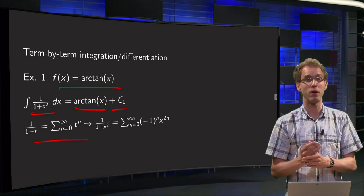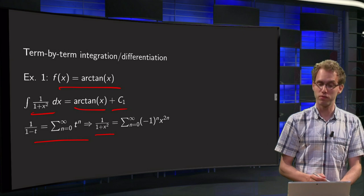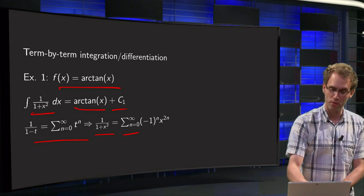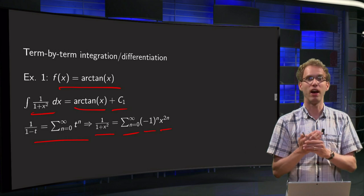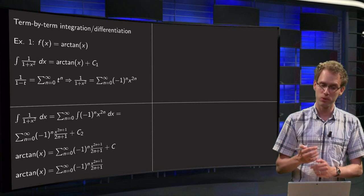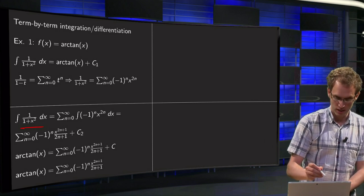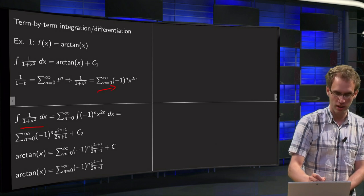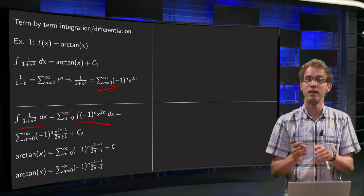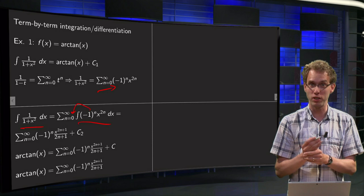We start as always with our geometric series: 1 over 1 minus t equals the sum from n=0 to infinity of t to the power n. We plug in minus x squared in place of t, so we get the sum from n=0 to infinity of (minus 1) to the power n times x to the power 2n. There we have our power series of 1 over 1 plus x squared. Then we integrate: the integral of 1 over 1 plus x squared dx means taking the integral inside the summation, so we integrate (minus 1) to the power n times x to the power 2n dx. Now (minus 1) to the power n does not contain x, so it can be taken in front of the integral, before the summation sign.